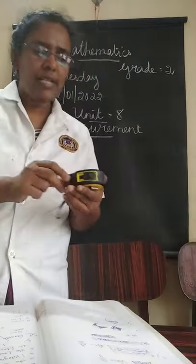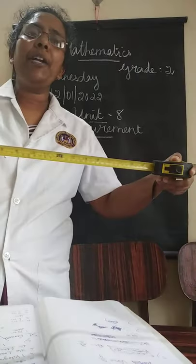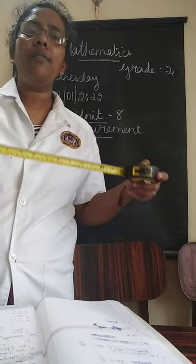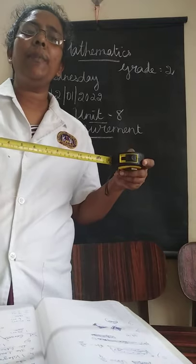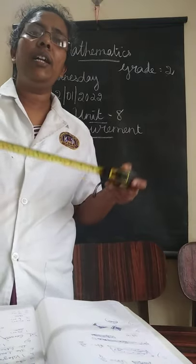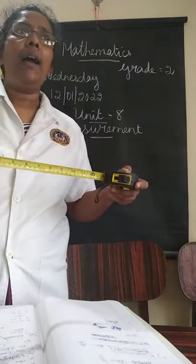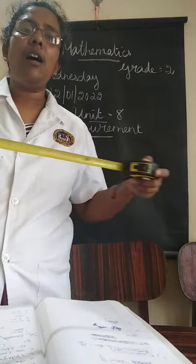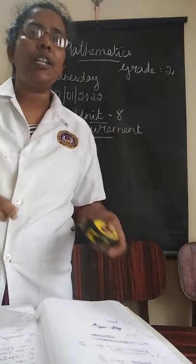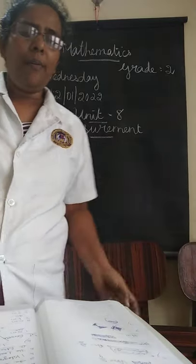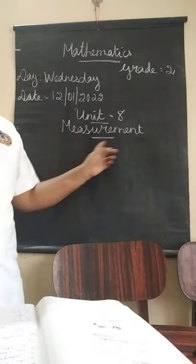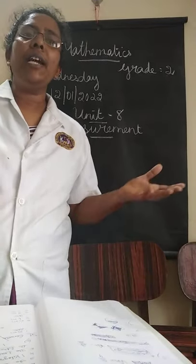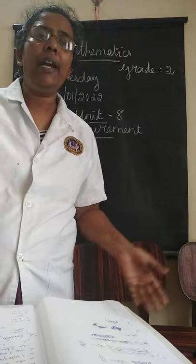This is a picture of a measuring tape. What is the use of this? This is used to measure bench, desk, wall, and door, etc. This is called the measuring tape. The measurement means it is used to measure some objects or things.